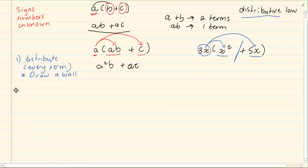When you are distributing, you need to consider the rules of signs, numbers and unknowns. When we are distributing, the rules of signs, numbers and unknowns are the multiplication rules that we are emphasizing on.